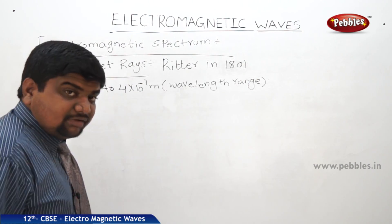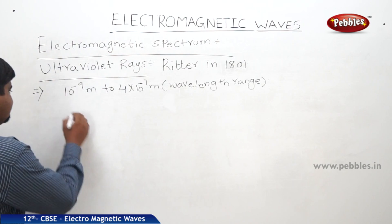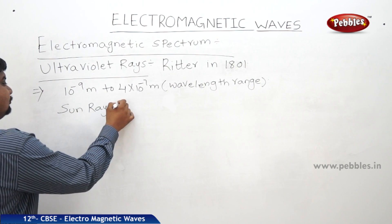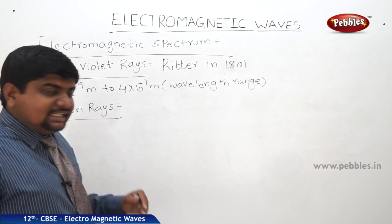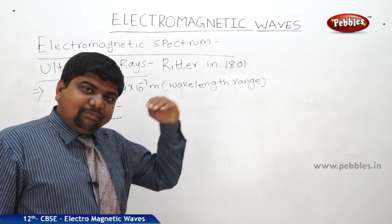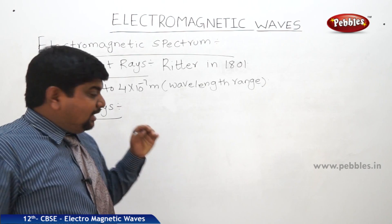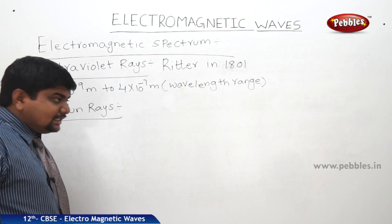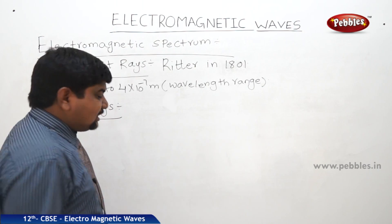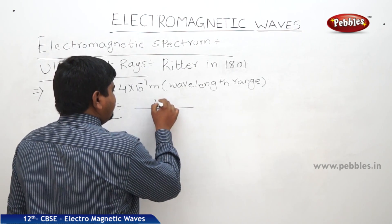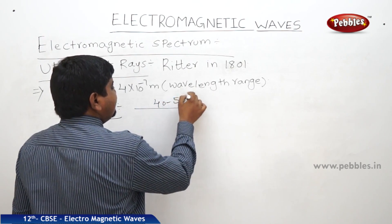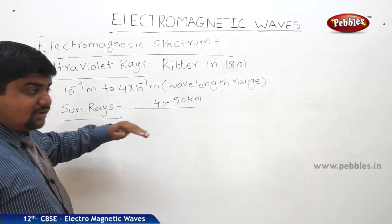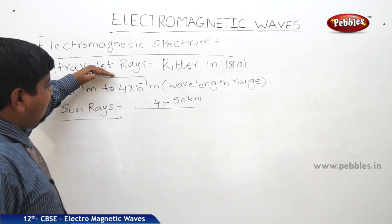The major source for ultraviolet rays is the Sun naturally. The major radiation emitted by the Sun is UV radiation. But the ozone layer, which is above a height of 40 to 50 kilometers from the Earth's surface, is filtering, completely absorbing, or reflecting the ultraviolet rays.